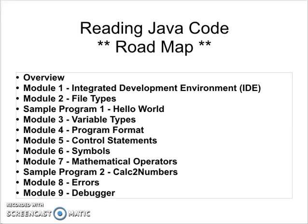In Module 7, we'll talk about the mathematical operators — the symbols or signs that you use to do math. Then we'll have a sample program which will use a lot of those mathematical operators, control statements, program formatting, and symbols. That program we'll name Calc 2 Numbers.